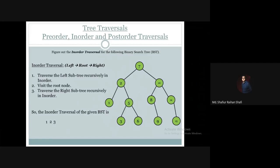In the right subtree of node 2, we will first visit node 3 and print it. Then we will traverse the root which is 5 and print it. Then we will traverse the right subtree of 5, which is 6, and print it. Finally we will visit the root of the whole tree which is 7 and print it.